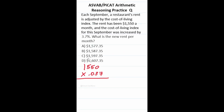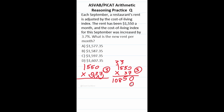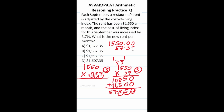This ASVAB PyCat arithmetic reasoning practice test question asks us to find what a 3.7% increase is on $1,550 rent per month. We multiply 1,550 by 0.037, shifting the decimal three places right to get 1550 times 37 with three decimals to move back. Working through: 0×7=0, 5×7=35 carry 3, 5×7+3=38 carry 3, 1×7+3=10; then for 30: 0, 5×3=15 carry 1, 5×3+1=16 carry 1, 1×3+1=4. Adding up gives 57350, with three decimals back that's $57.35. Adding to $1,550 gives D, $1,607.35.